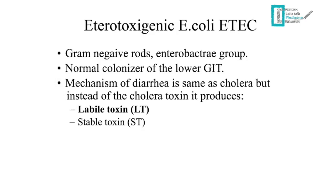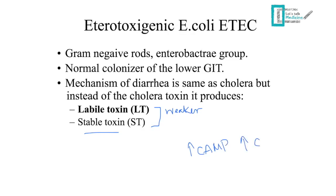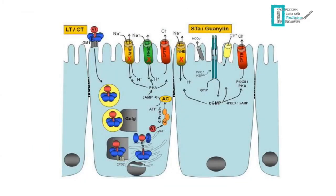Another organism causing watery diarrhea is enterotoxigenic E. coli — a gram-negative rod from the Enterobacteriaceae group and a normal colonizer of the lower GI tract. The mechanism is the same as cholera, but it has two toxins: labile toxin and stable toxin. The labile toxin has the same mechanism as cholera toxin but is weaker, making the resulting diarrhea less severe than cholera. The stable toxin has a similar mechanism but increases cyclic GMP instead of cyclic AMP.